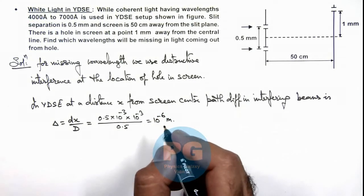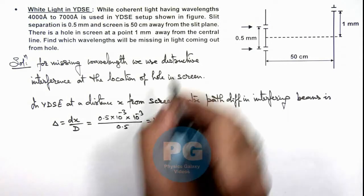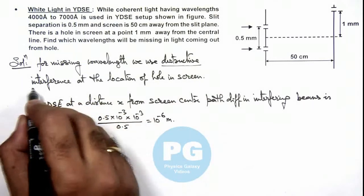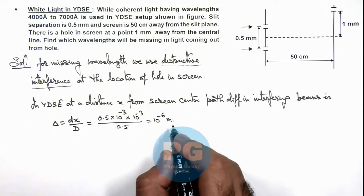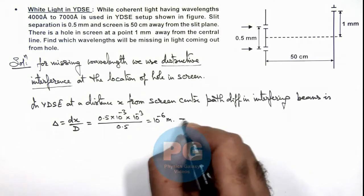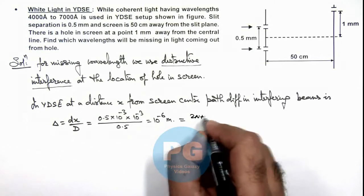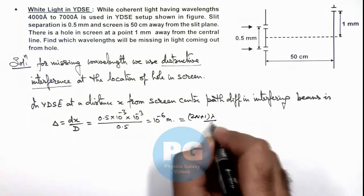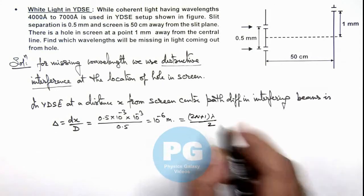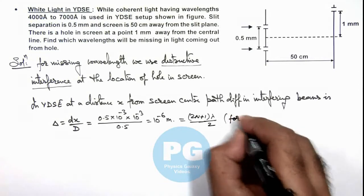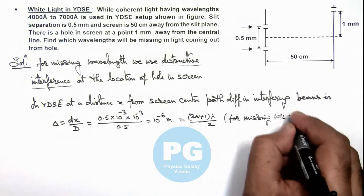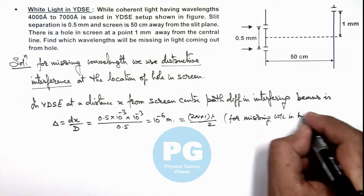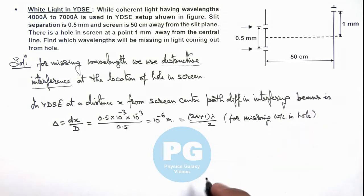Now for destructive interference, as we have written, this path difference should be equal to an odd multiple of lambda by 2. So this should be equal to (2n+1) lambda by 2 for missing wavelengths in hole.